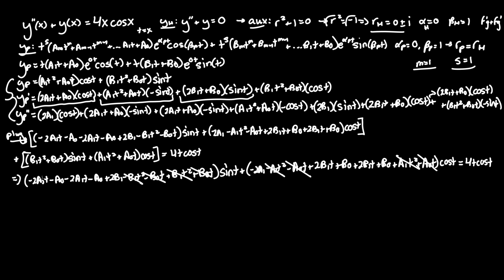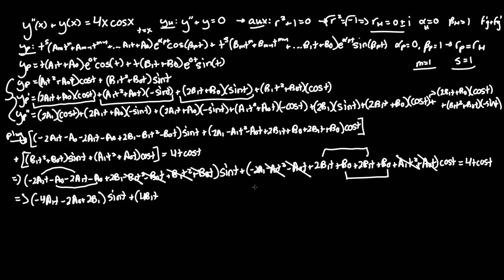There was a small notation error: the cosine constant equation is actually +2a₁ + 2b₀ = 0, not -2a₁. Correcting this: b₀ = -a₁ = 0. So our undetermined coefficients are: a₁ = 0, b₁ = 1, a₀ = 1, b₀ = 0.